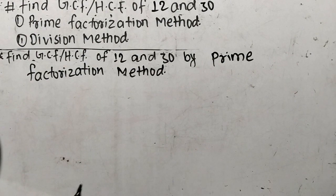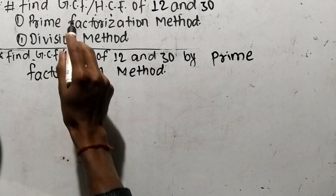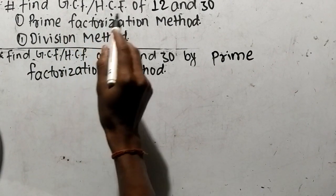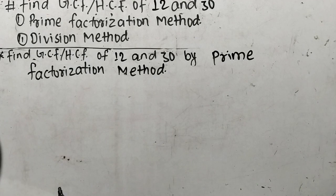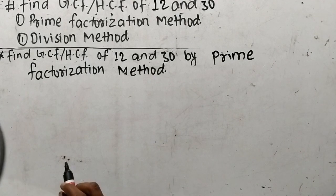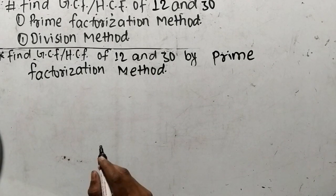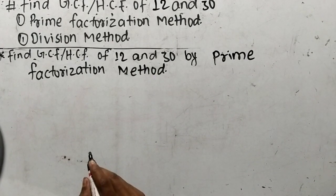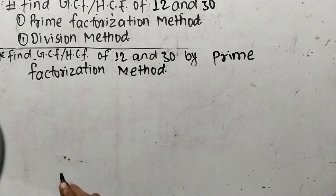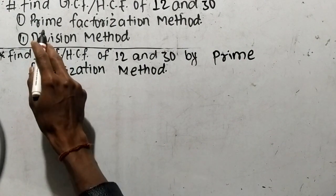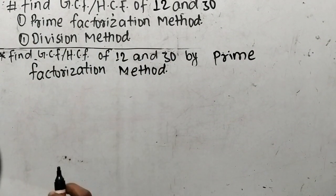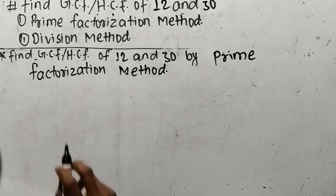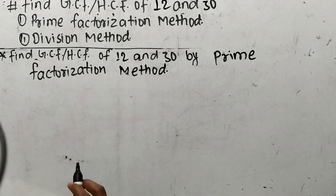Today in this video, we shall learn to find GCF or HCF of 12 and 30. We shall find out GCF or HCF of 12 and 30 by two methods: first by prime factorization method and second by division method.